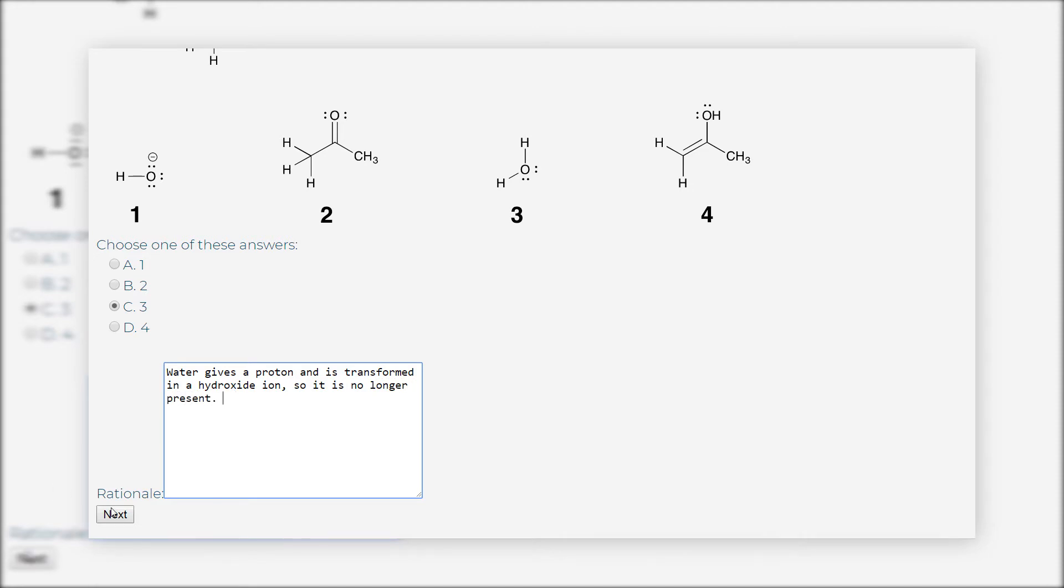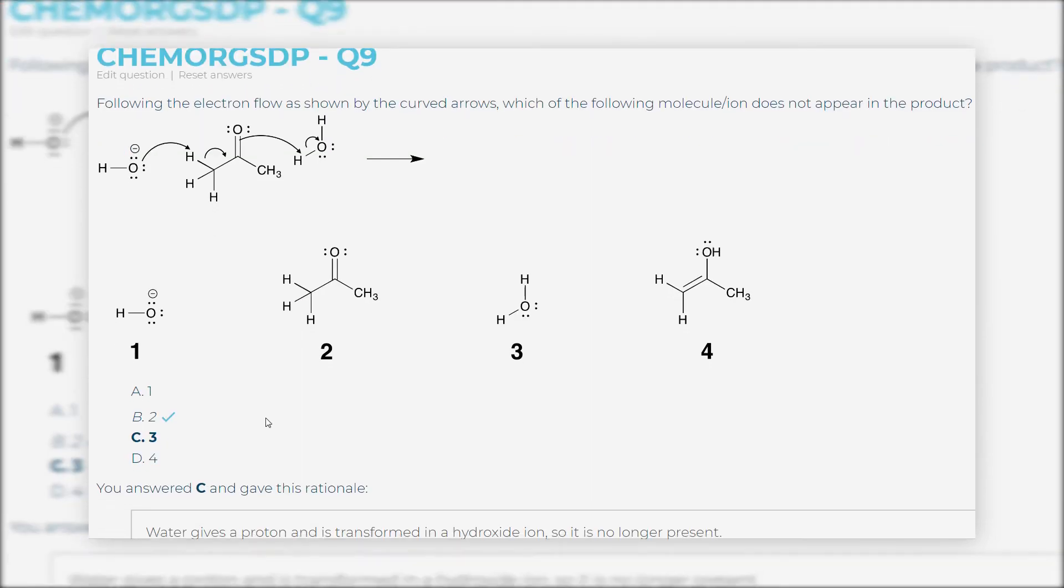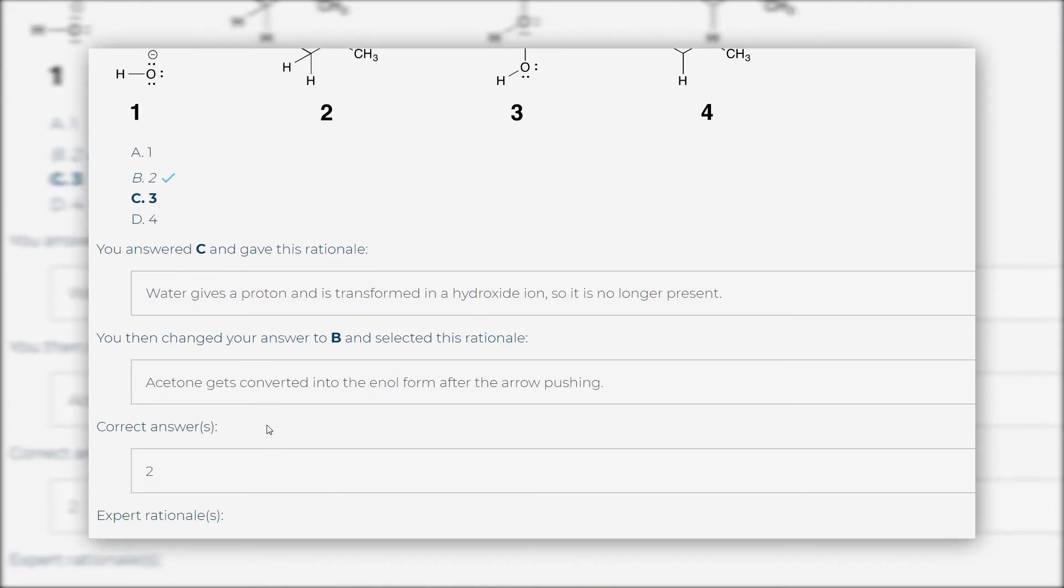They are then asked to review and consider other explanations submitted by peers, some of which may support or contradict their chosen answer. Students can then reorient their original choice.